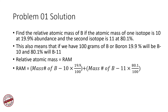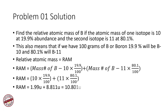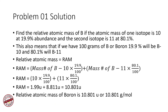RAM equals mass number of boron-10 times 19.9/100 plus mass number of boron-11 times 80.1/100. That is: RAM = (10 × 19.9/100) + (11 × 80.1/100) = 1.99 + 8.811 = 10.801 units. So the relative atomic mass of boron is 10.801 units, or equivalently 10.801 grams per mole — which becomes clearer when you learn about moles.